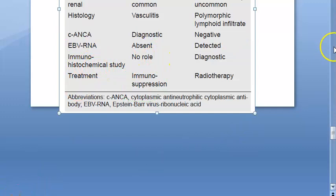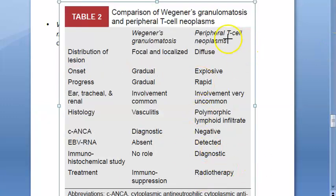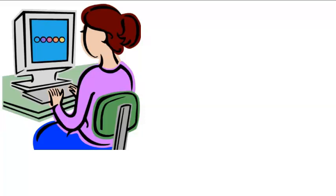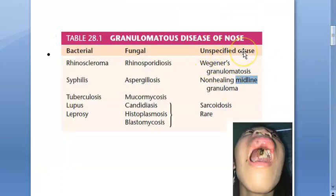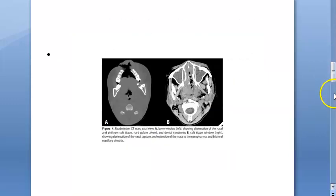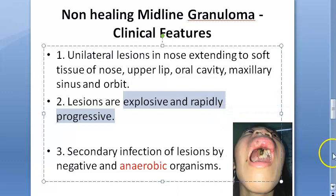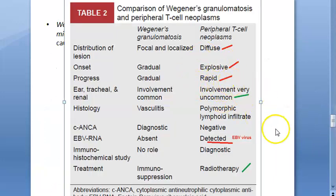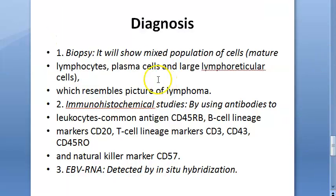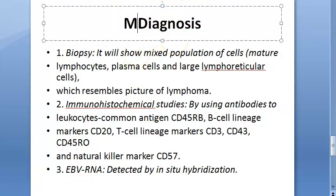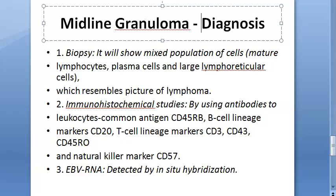EBV RNA is detected in the peripheral T-cell neoplasm. Although the textbook initially described it as slowly destructive, both the clinical features section and the comparison table confirm that the onset is explosive and rapidly progressive, so we go with the rapid progressive description.